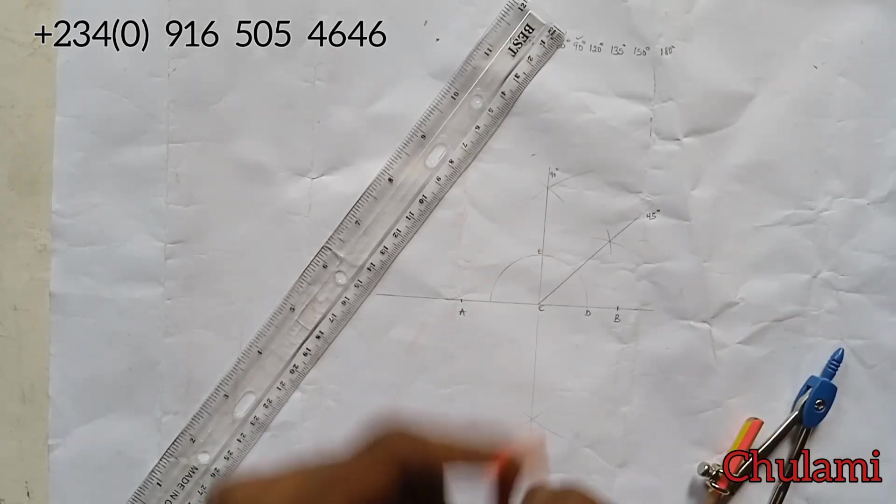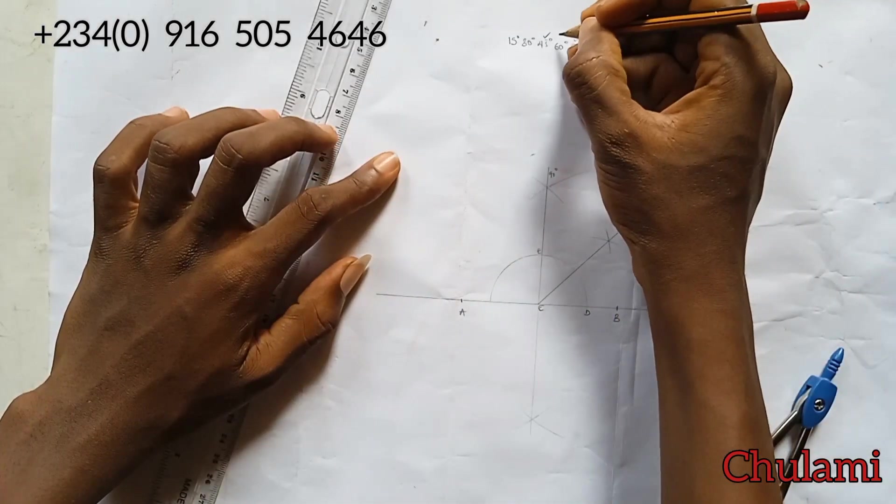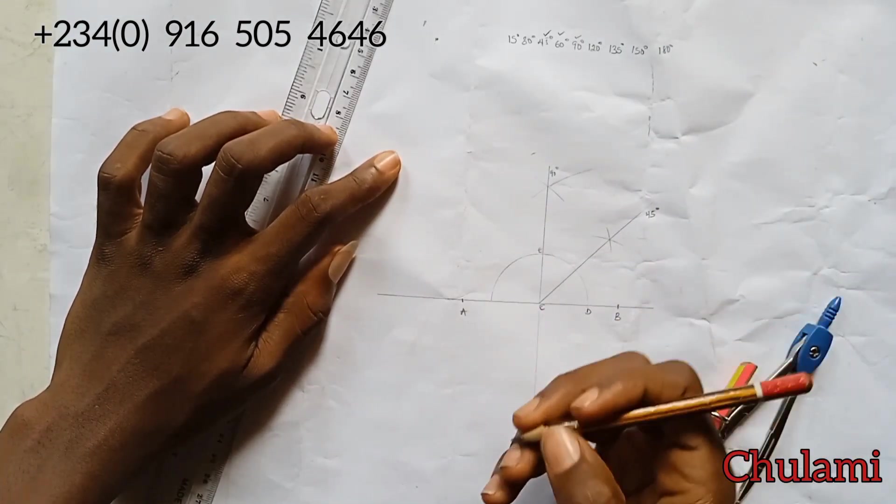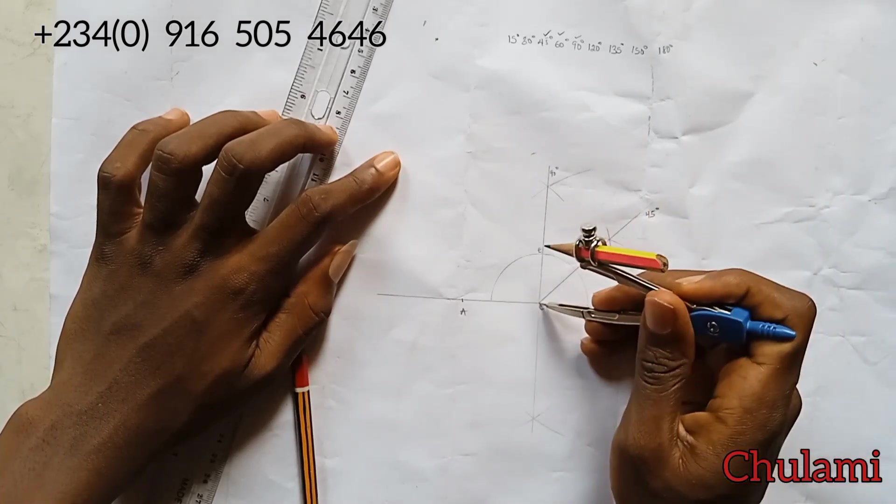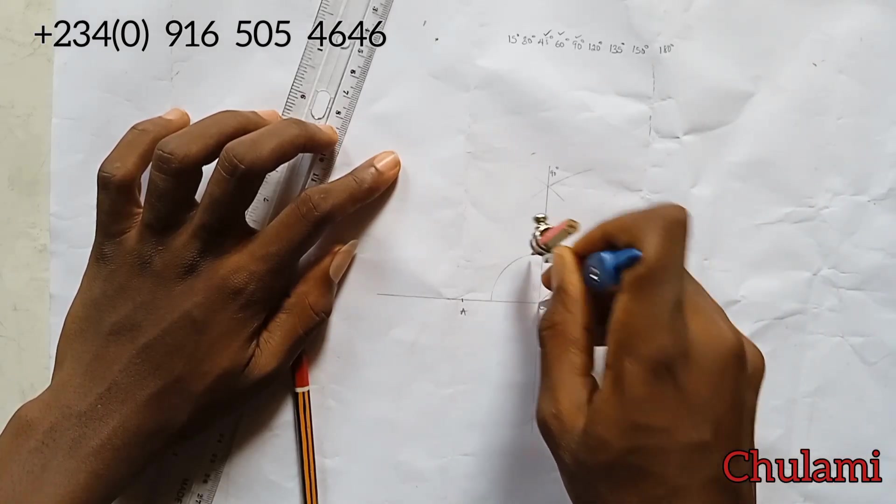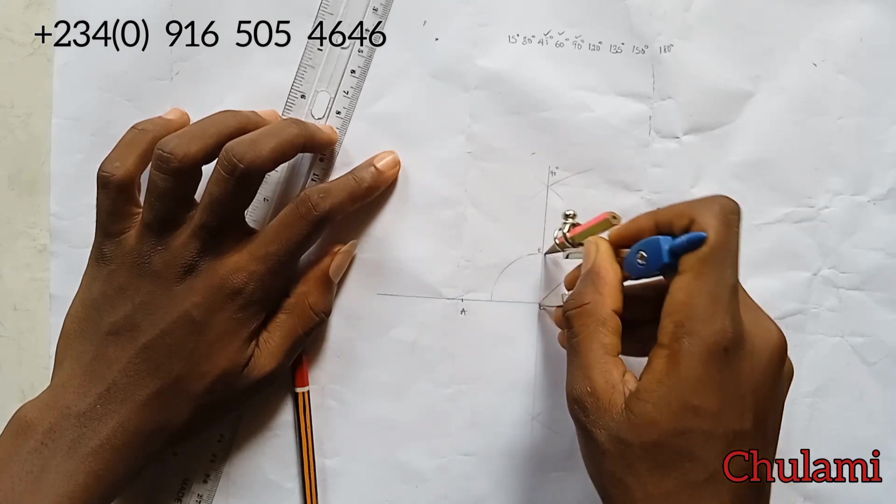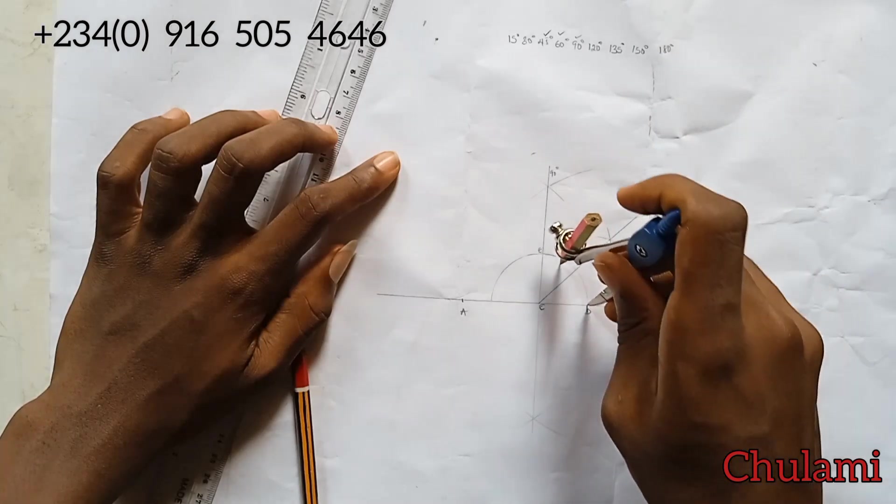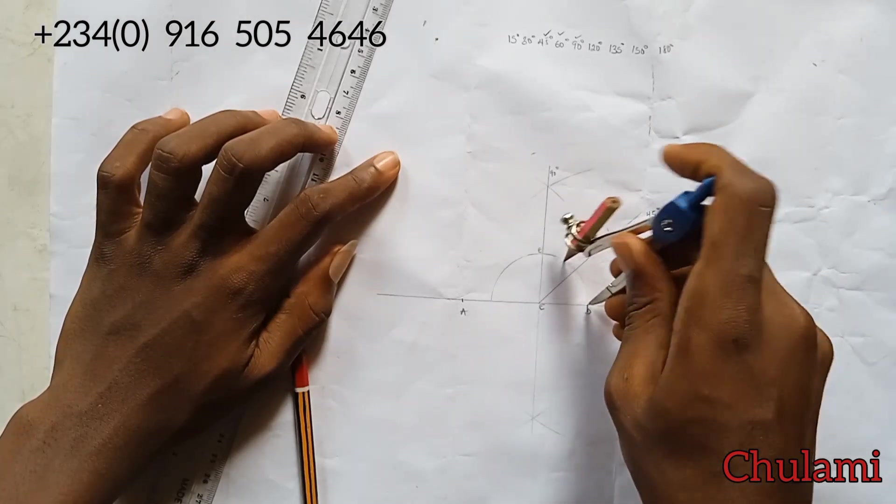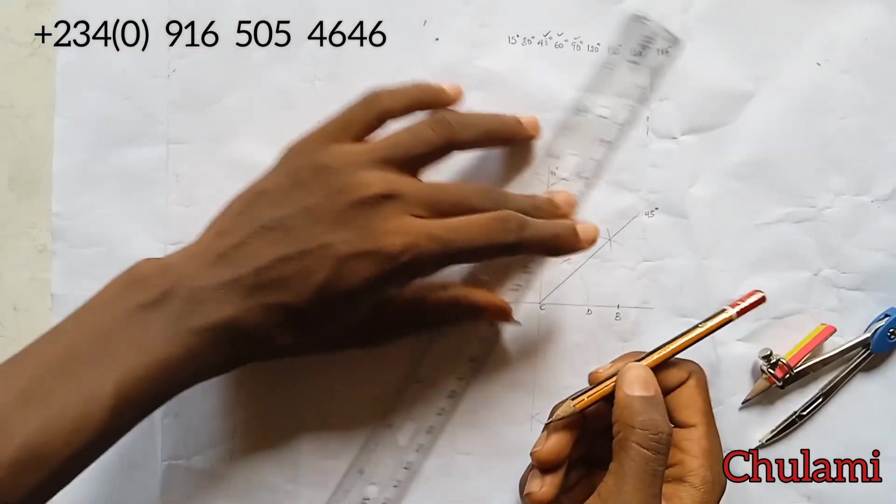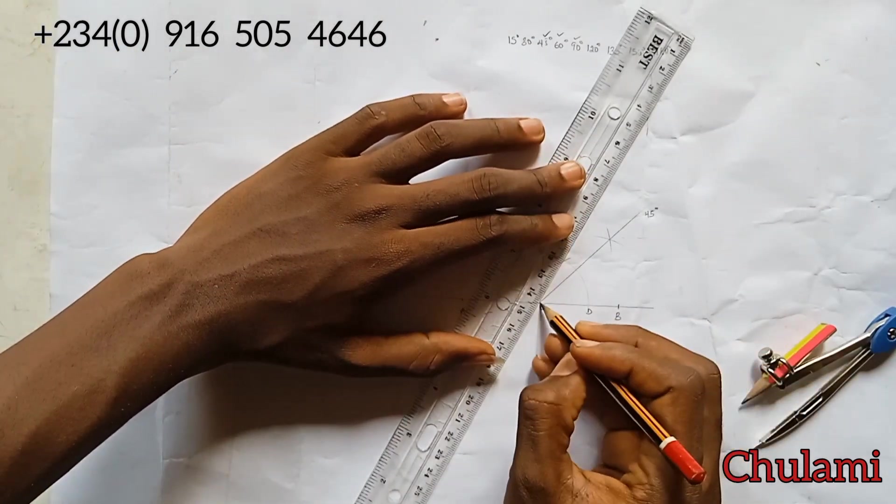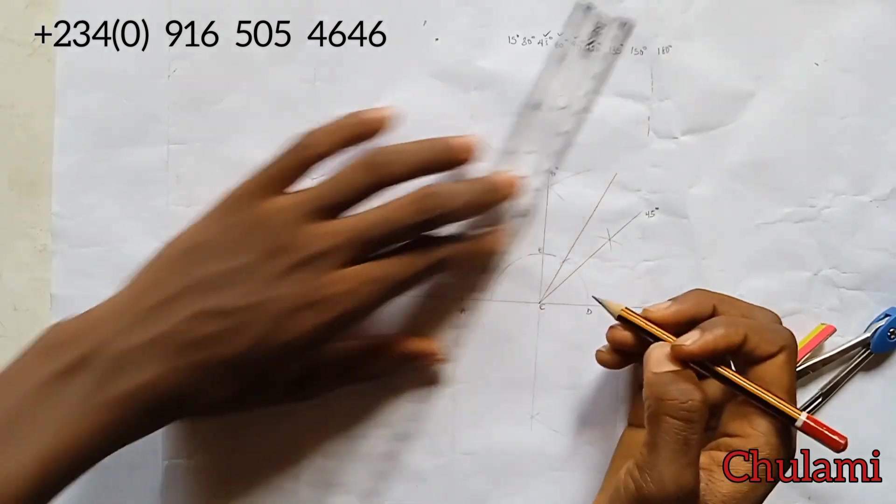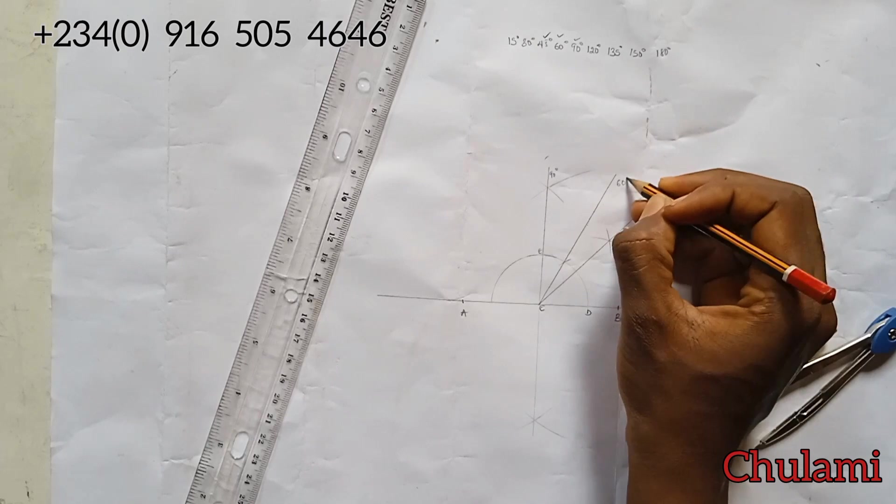All right, so I've done 45. Let's go for 60. I'll get back the radius of this arc, the way I used to draw this arc. Get the radius back and I'll place that at E and cut an arc on the semicircle. And then that arc I cut will be the point for 60 degrees, and I will draw a straight line. This is automatically 60 degrees.